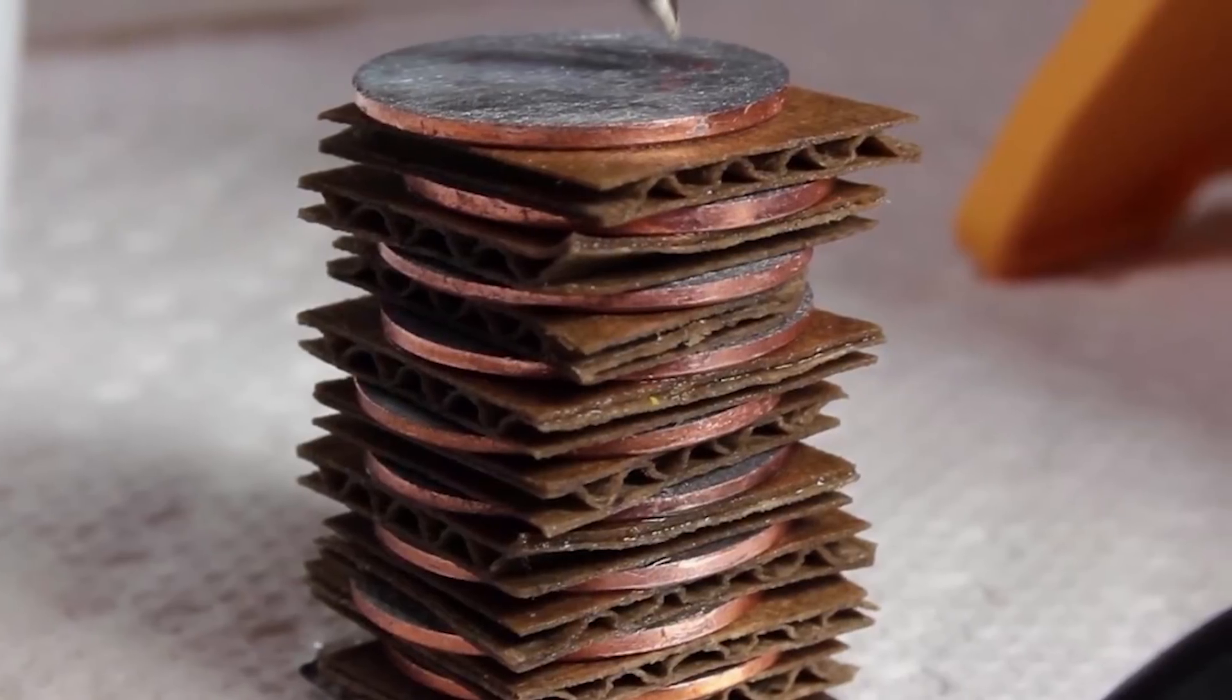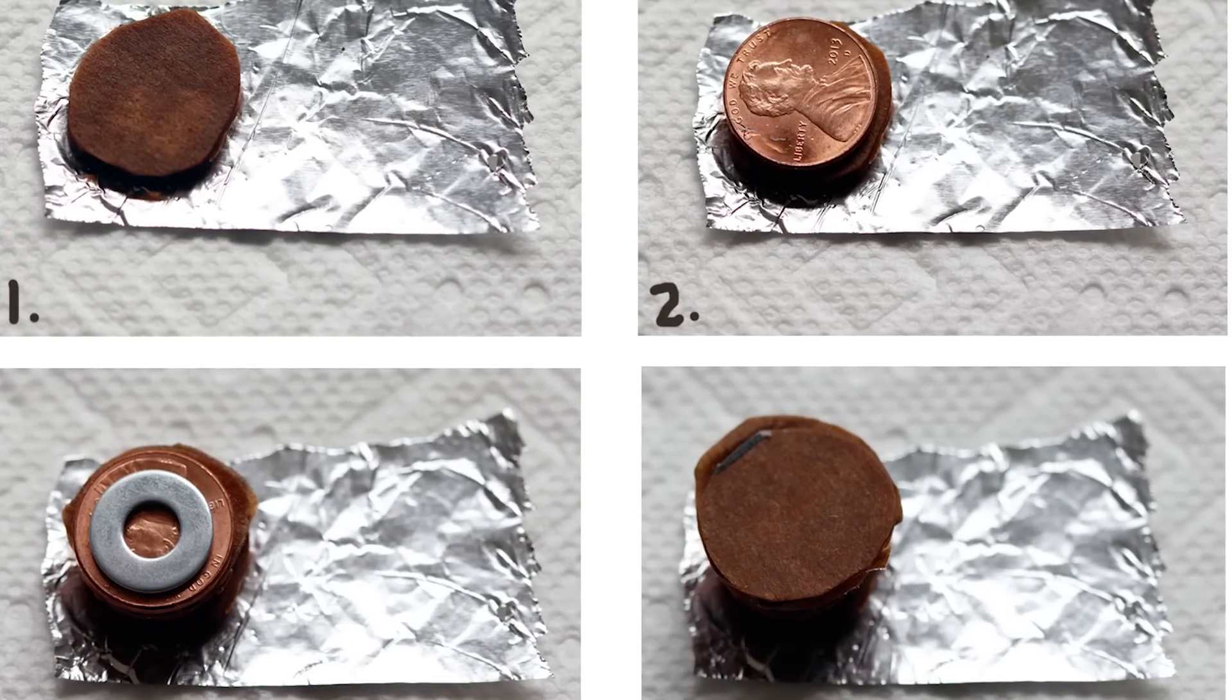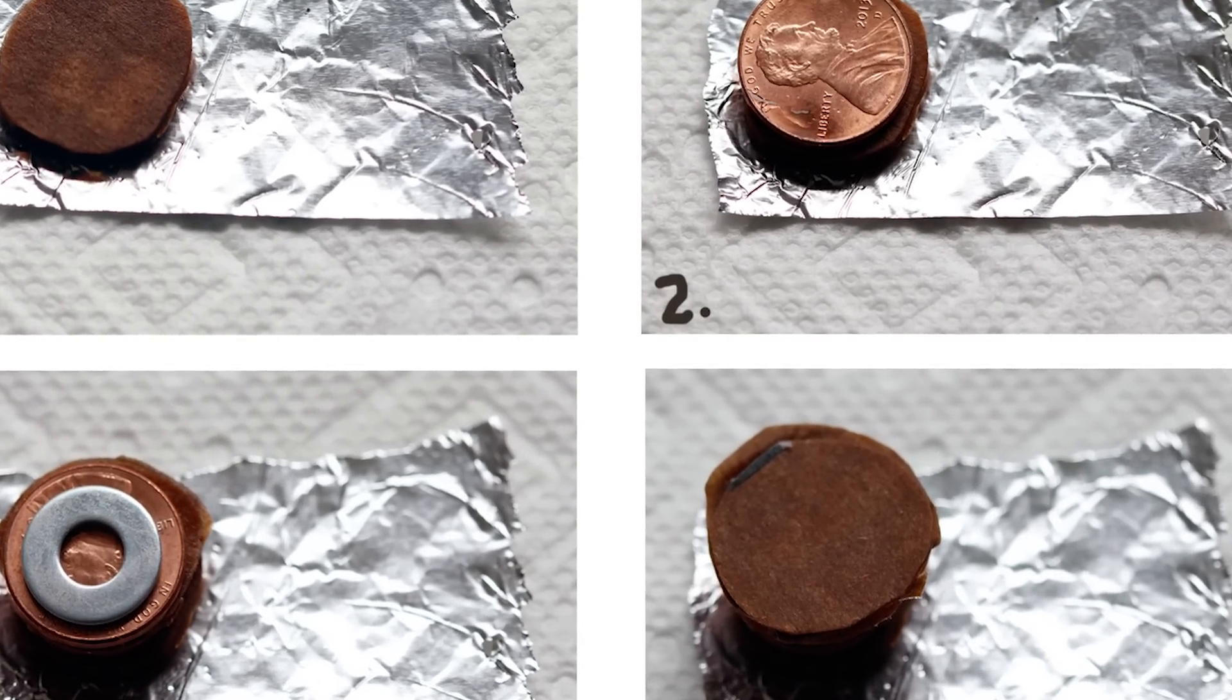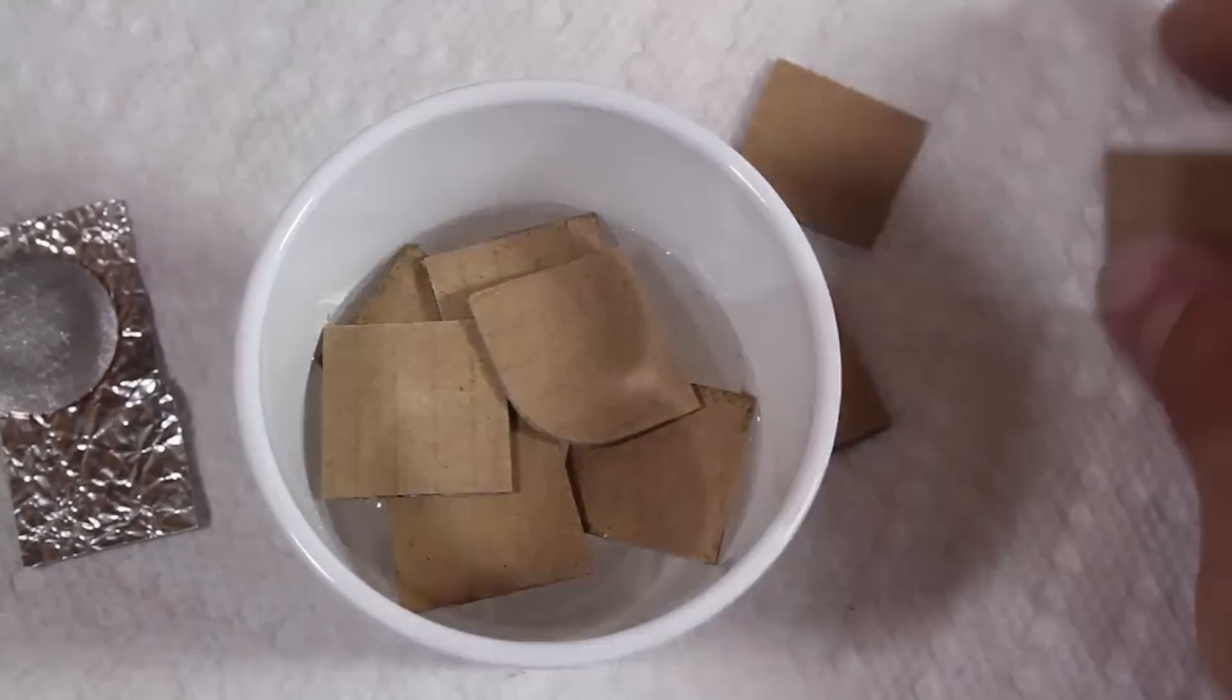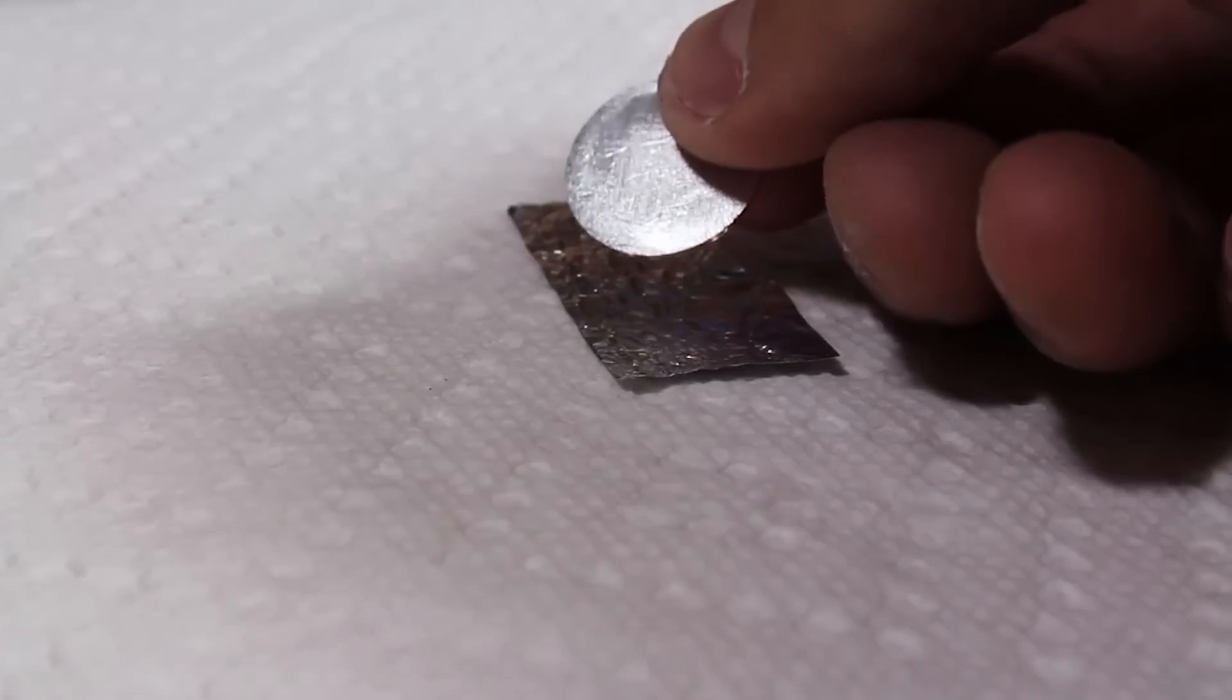You start by cutting out a few pieces of cardboard that are only slightly larger than the pennies. Soak these in vinegar for a few minutes before placing a small strip of aluminum foil on a flat surface. Place one washer at the end of this and put a piece of cardboard on top of it, followed by a penny.